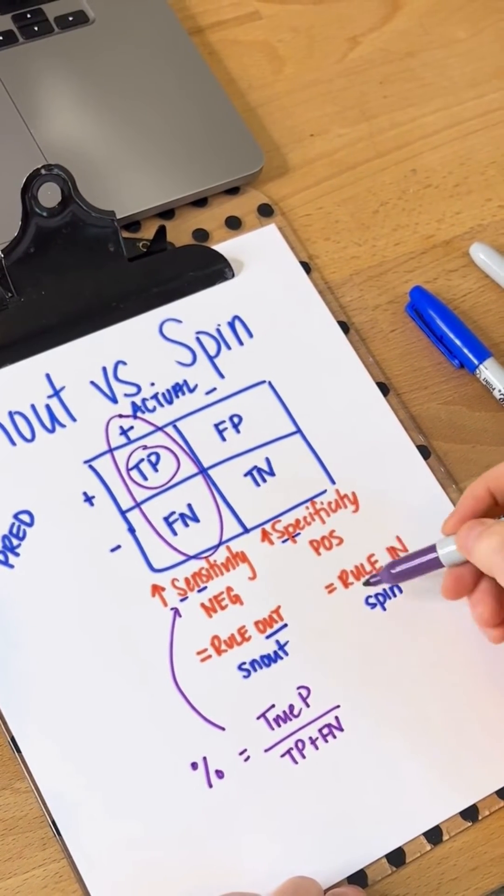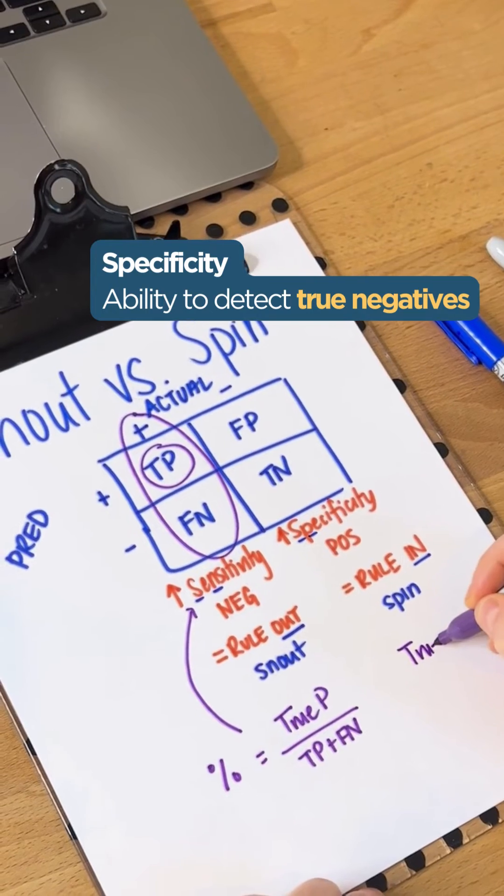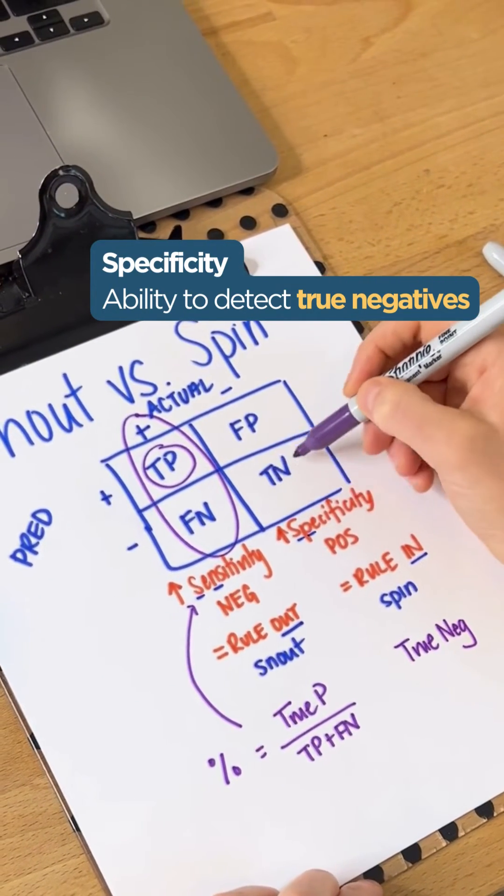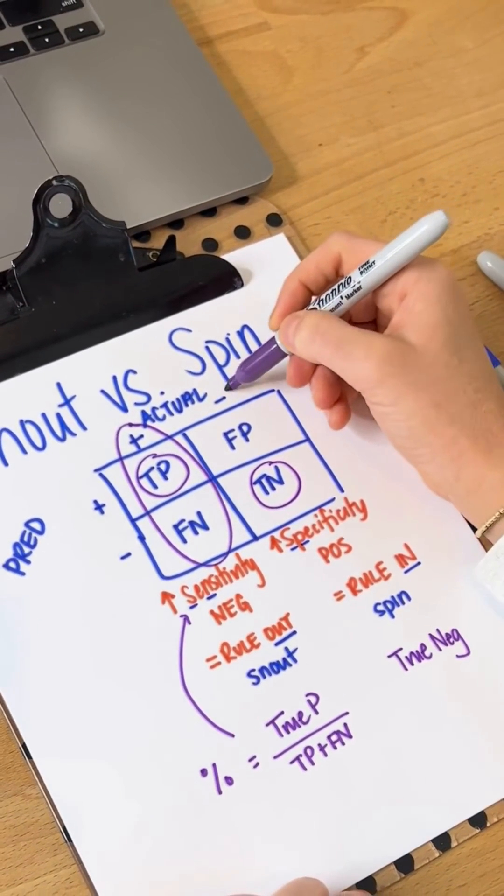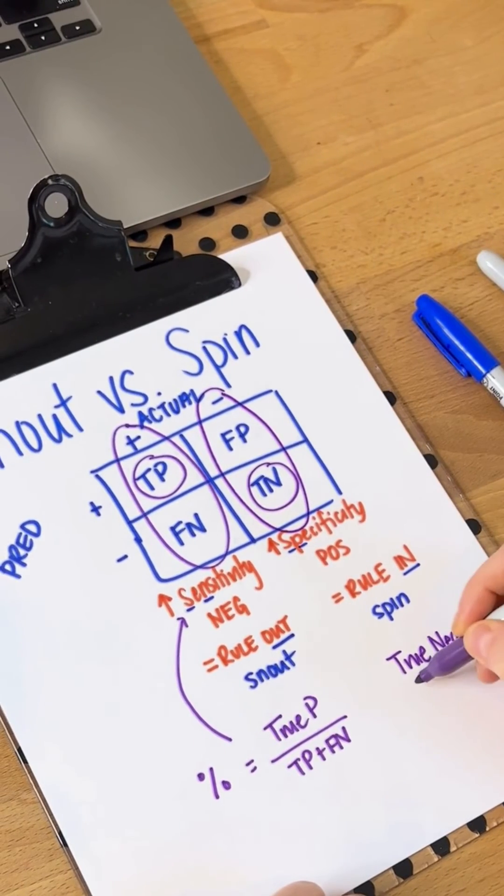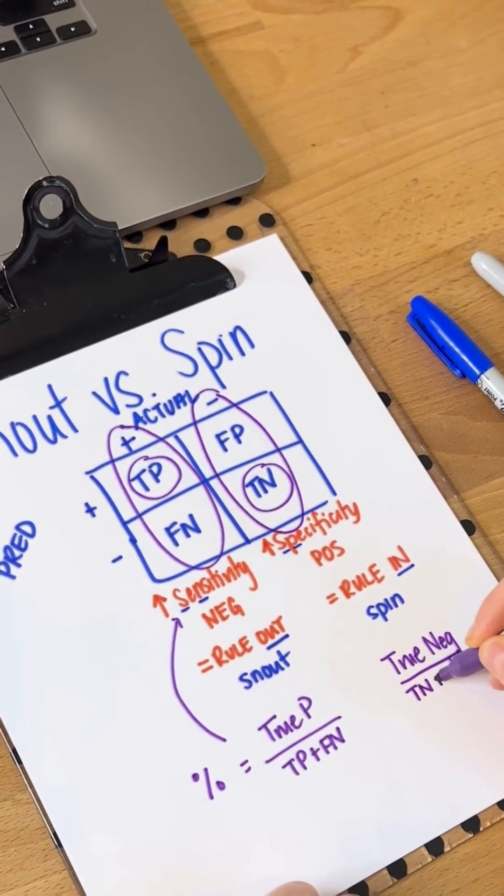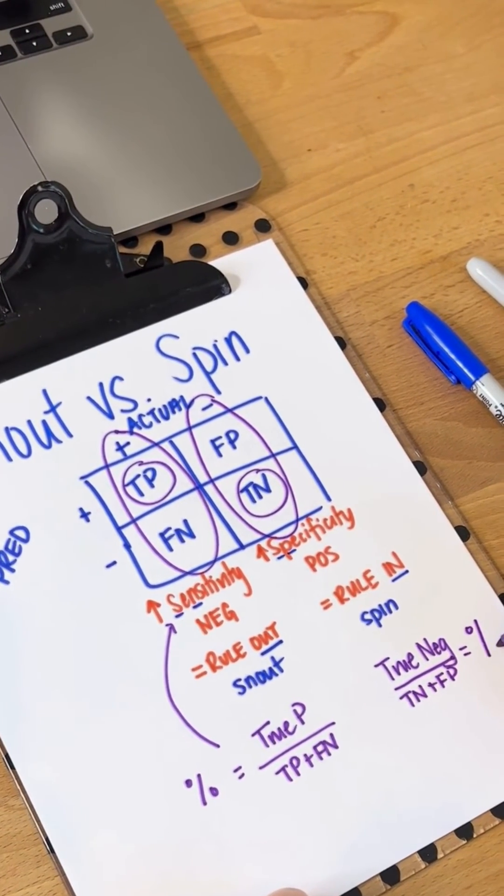Let's look at specificity. Remember what we're looking at with specificity is its ability to correctly identify the absence of disease. So we're looking for a true negative, and then we have to look at all the people who actually don't have it. So our true negatives and false positives.